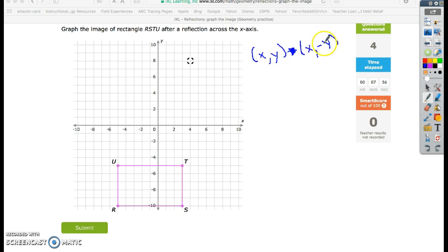So to use this rule, all I do is I change my y to the opposite. What I have to do first is I got this rectangle, and first thing I got to do is write down my points.